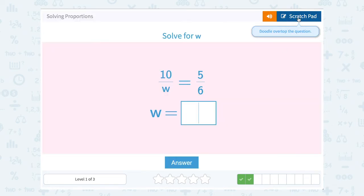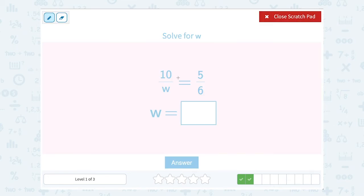Solve for w. We have 10 over w equals 5 over 6. We're going to cross multiply. 10 times 6 gives us 60. And w times 5 gives us 5w.